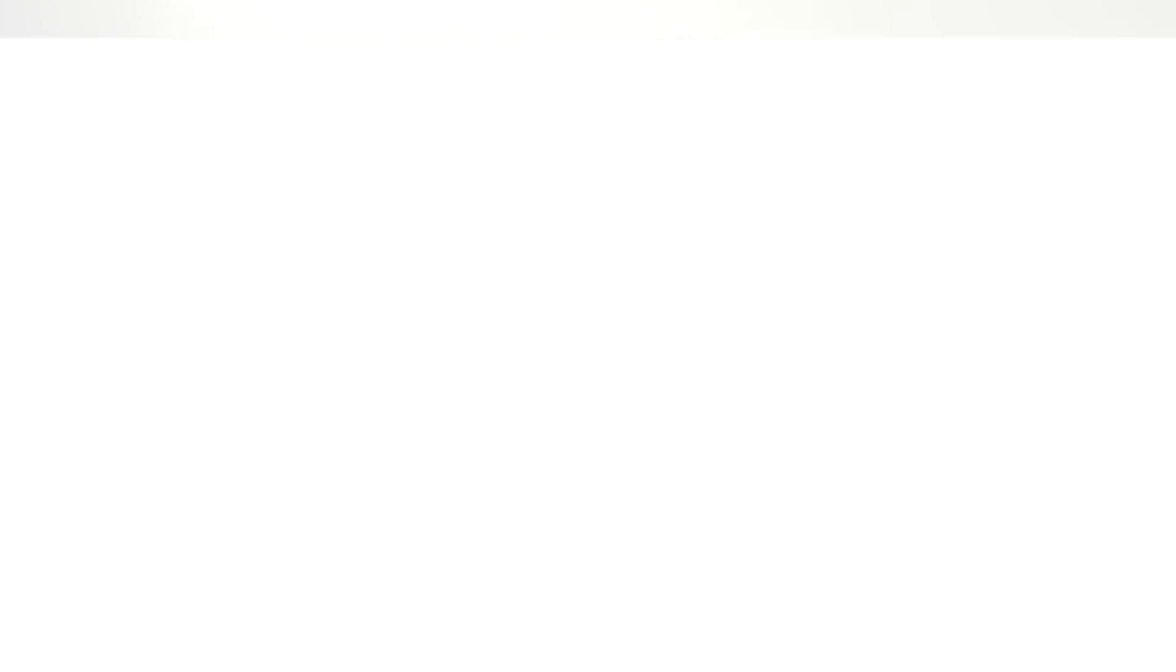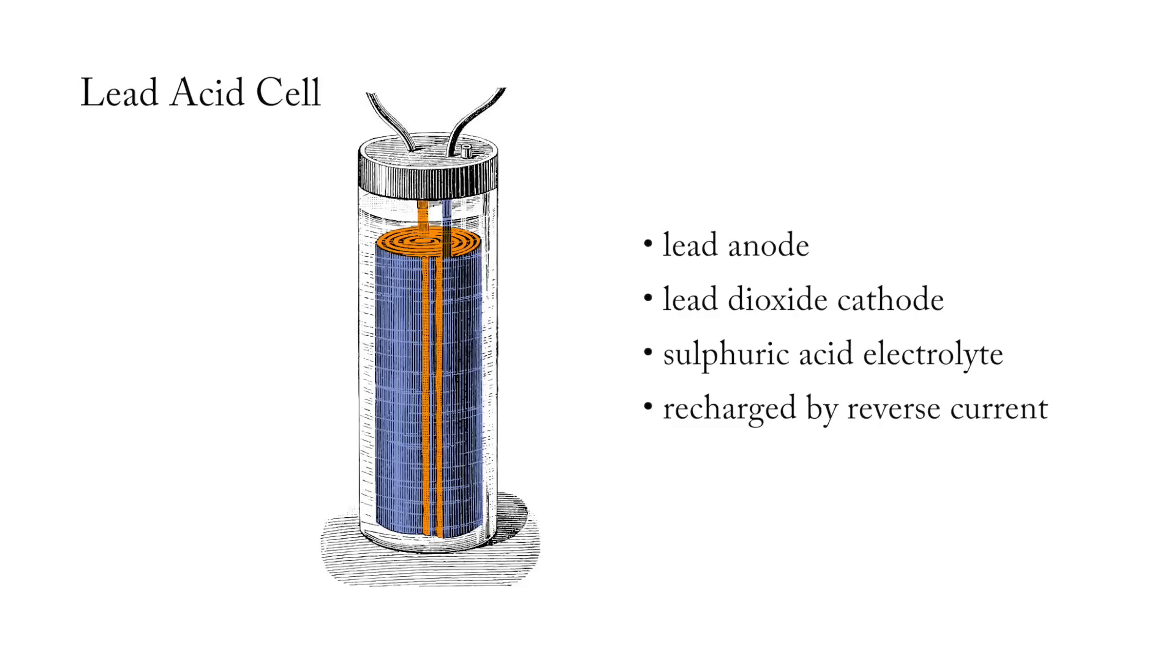In 1859, French physicist Gaston Plante created the first rechargeable battery, using a lead anode and a lead dioxide cathode immersed in sulfuric acid. The chemical reactions inside Plante's lead acid cell could be reversed by passing a reverse current through it. A pretty amazing feature, but its weight and size made it impractical for most uses. Still, it was suitable for some things. In fact, lead acid cells are still used in cars today.